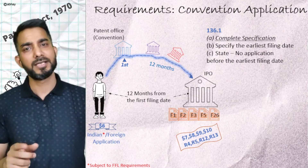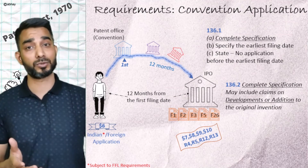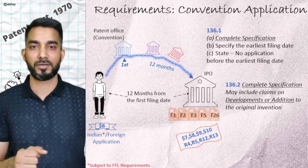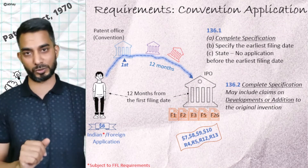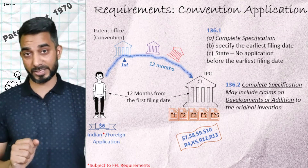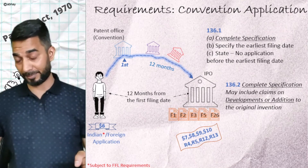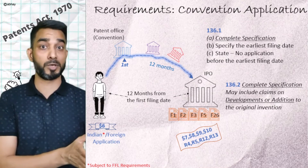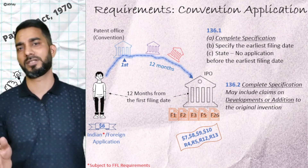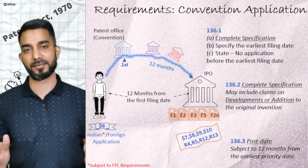Section 136.2 says you are free to include claims in the convention application with regards to any addition or modification that might have happened to the original application filed in the convention country. The priority date of such a claim will be computed based on when it was first disclosed. One interesting aspect: you can post-date a convention application under Section 17, subject to ensuring the 12-month period from the basic application to the Indian filing is not extended. Section 136.3 addresses this post-dating requirement.